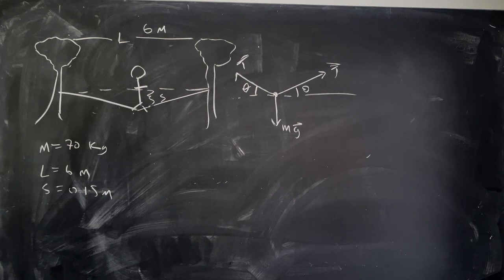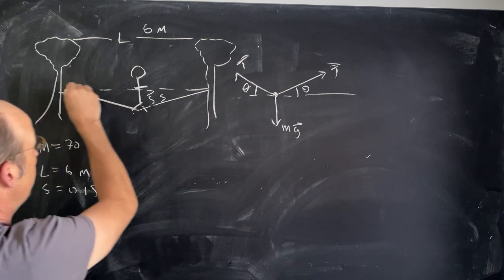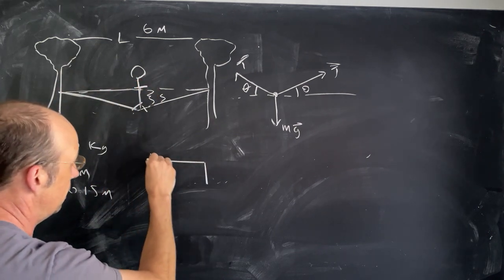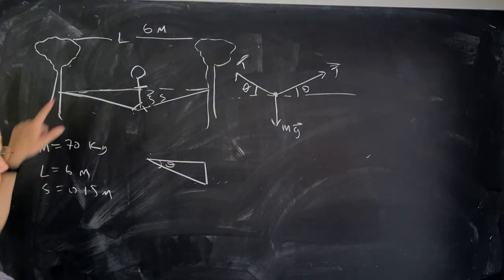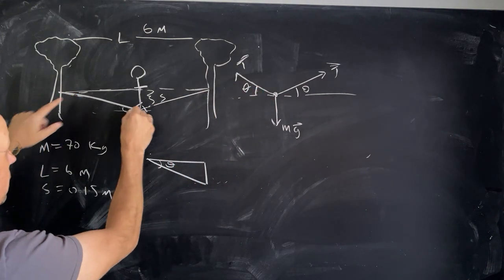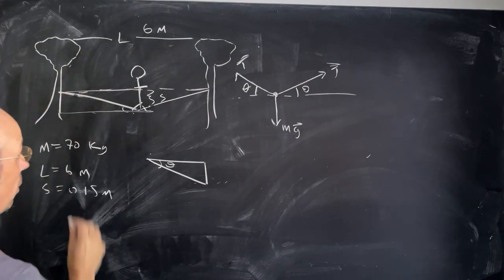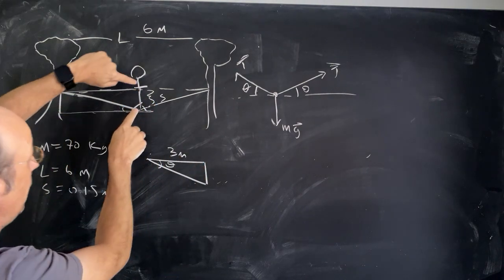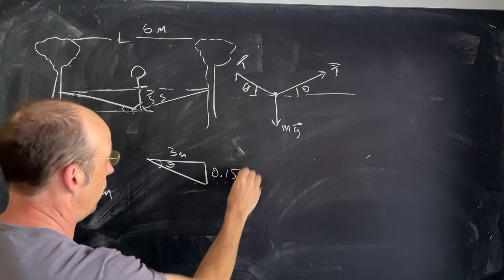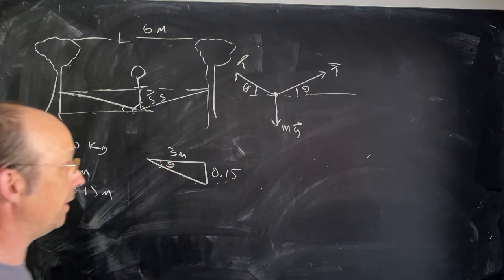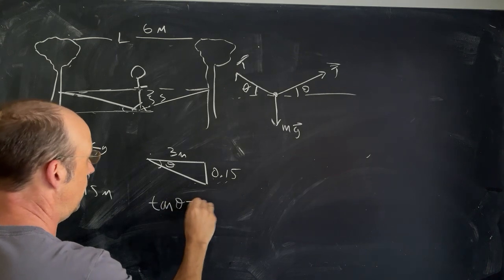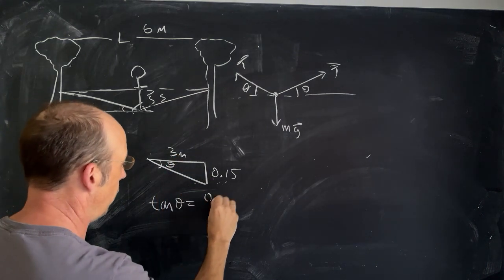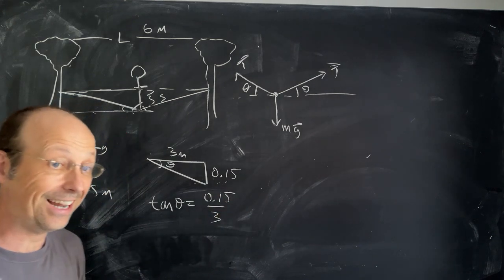Now I need to write down Newton's second law, but I need those angles first. Let's look at this triangle. I'll redraw it — not to scale — with angle theta. That angle theta is the same as the angle in the rope because these are parallel lines with opposite angles. This side is three meters because it's halfway, and the sag is 0.15 meters. So the tangent of theta equals opposite over adjacent: 0.15 over 3.